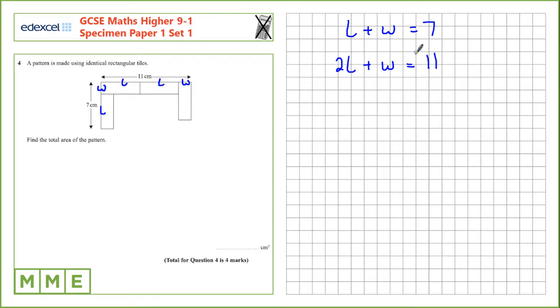We can solve these simultaneously. So let's take this equation from this one. So 2L take away L is L. W take W is nothing. And 11 take 7 is 4. So we know that L equals 4.